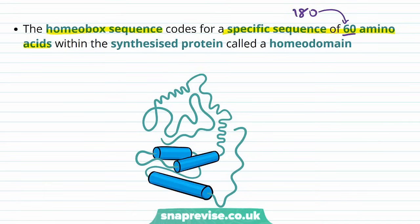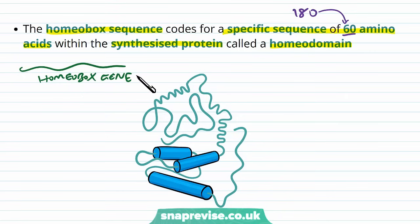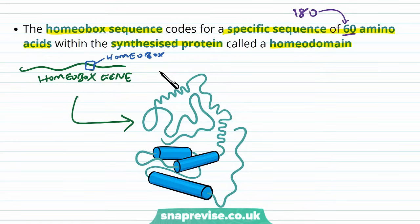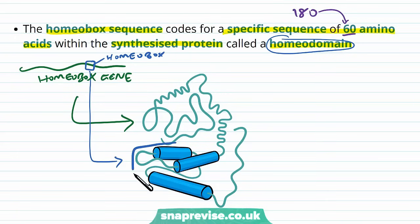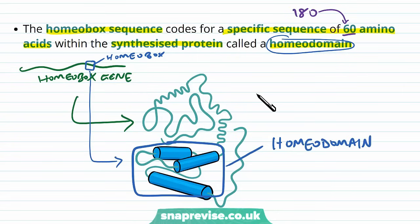Within the synthesized protein made by the whole homeobox gene, there is a specific sequence called a homeodomain. To sort out the hierarchy: in the DNA we have a homeobox gene, which codes for a protein. Inside the homeobox gene is the homeobox — a specific 180 base pair conserved region — and this part contains the information to make the homeodomain portion of the protein. So the homeobox codes for the homeodomain. There are lots of levels of hierarchy with very similar names, so it's important to be clear on which is which.